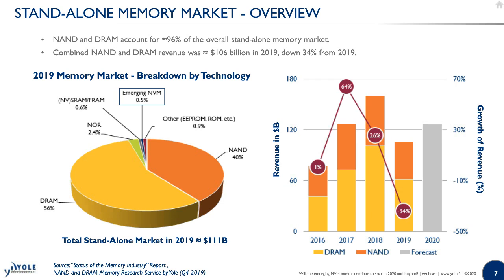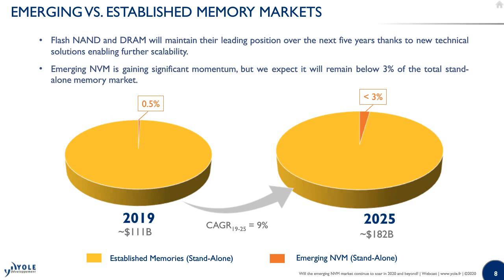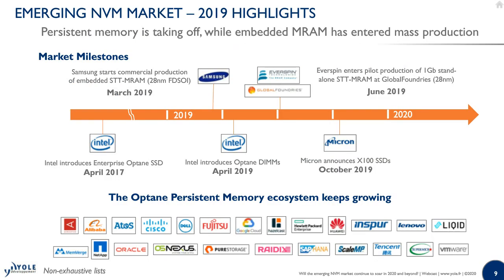This 0.5 percent does not seem impressive, but when compared to the total market it is still a significant business, and it is expected to grow. We forecast an increase in the overall emerging non-volatile memory market from 0.5 percent in 2019 to just under three percent by 2025. We need to compare this with the huge standalone memory market, which will be on the order of 80 to 180 billion dollars by 2025. Importantly, NAND and DRAM will not be displaced by emerging NVM — they will maintain their leading position — but emerging NVM is gaining momentum and is expected to become a multi-billion dollar business.